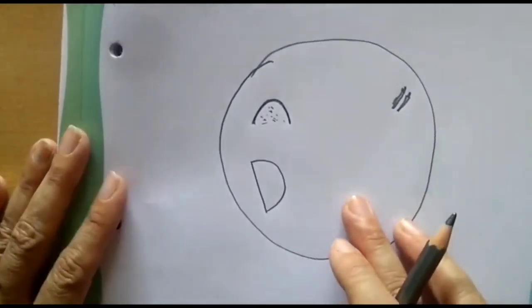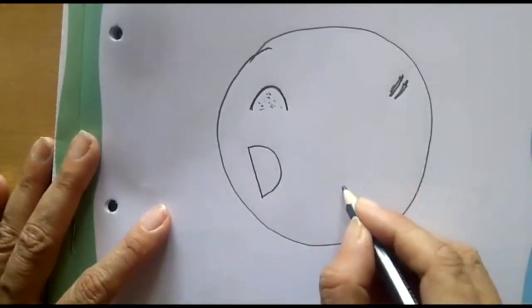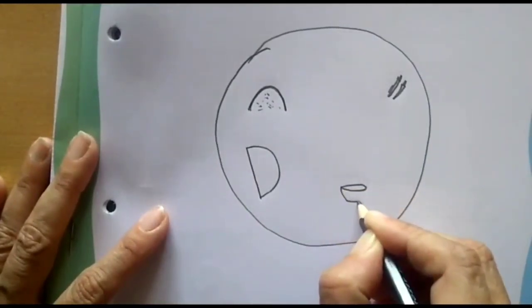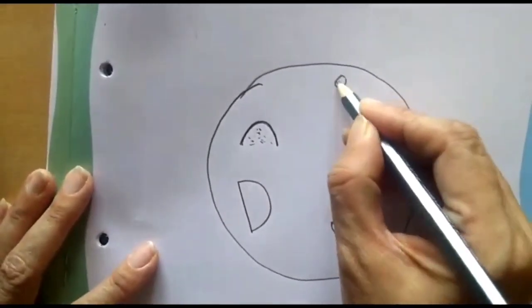Then dal is always good for us, isn't it? Pulses. So we need to keep something here in a small bowl. You can have little cucumber also.